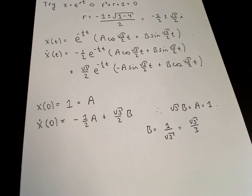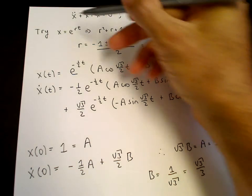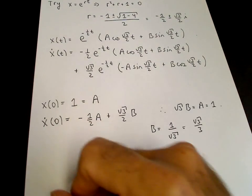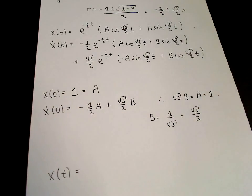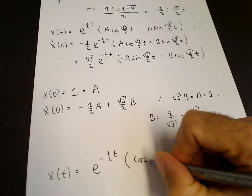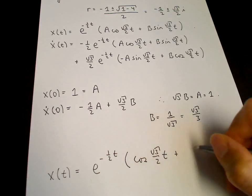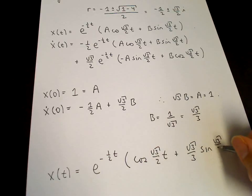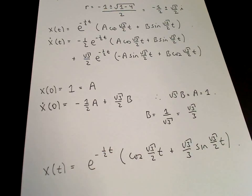So then we have our solution. The solution of our differential equation is e to the minus one half t times cosine root 3 over 2 t plus root 3 over 3 times sine root 3 over 2 t. That completes the solution. Thank you.